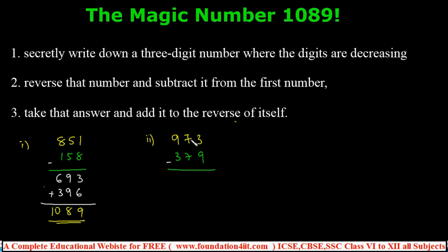You can take any number. Let's try 973 minus 379, which equals 594. After subtracting, reverse it to get 495 and add. Again, you get 1089.